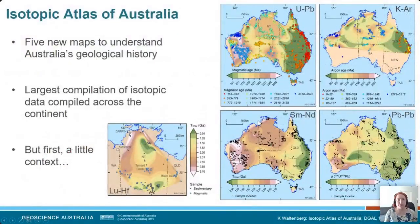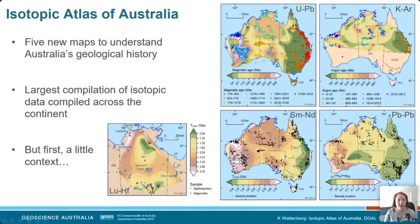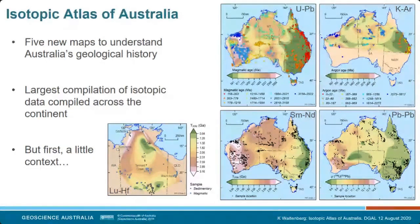Starting at the end of my talk, I want to tell you what we've done with the isotopic Atlas of Australia: we have five new maps to understand Australia's geological history, based on isotope data. This is, I think, the largest compilation of isotopic data compiled across the Australian continent — the first time all of this data has been put together at this scale.